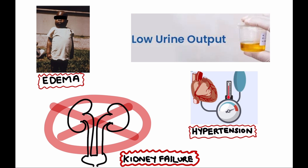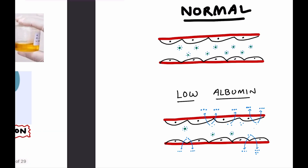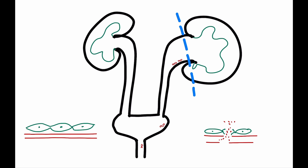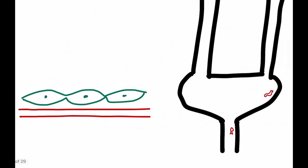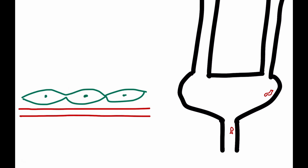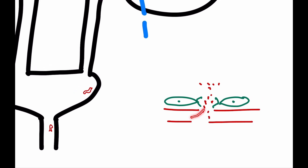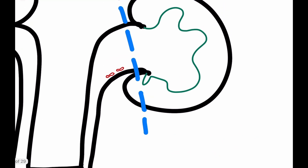Now let's understand how bleeding occurs in lower hematuria. When there is bleeding from anywhere in the pelvicalyceal system to the urethra, it is called lower hematuria. This region is lined by urothelium, which has a layer of capillaries underneath. When the urothelium is damaged, these capillaries get exposed and blood is released directly into the urinary space with no filtration barrier. The RBCs are therefore fresh and intact — not metabolized or broken — which is why lower hematuria is red in color and can have blood clots.